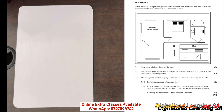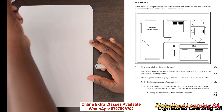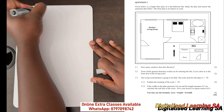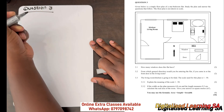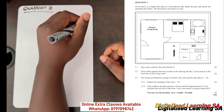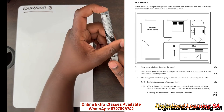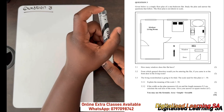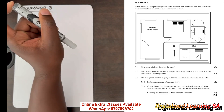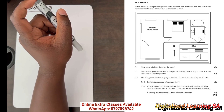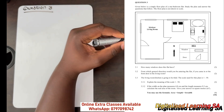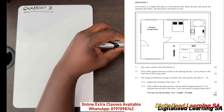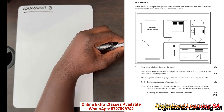Now let's work on question three. We are told that given below is a simple floor plan of a one-bedroom flat. Study the plan and answer the questions that follow. We can see that the plan has a kitchen which also includes a living room, and it also has a one bedroom.